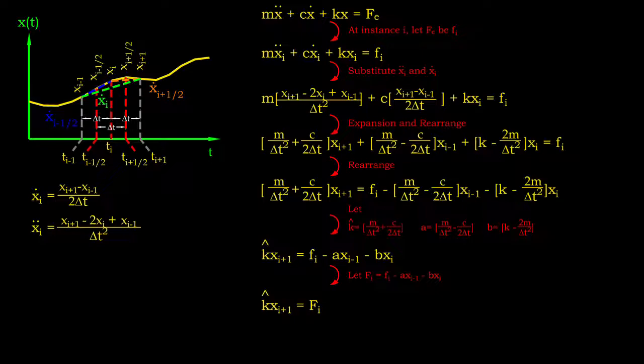At instance i, the equation of motion may be rewritten by substituting their velocity and acceleration expressions. Note that the external force Fi is the applied force at that instance. After expansion, we may arrange the equation according to the displacement terms. The purpose of CDM is to predict the displacement response of structure at the next instance using the current and previous instance responses. Therefore, let's express the future displacement response in terms of other parameters.